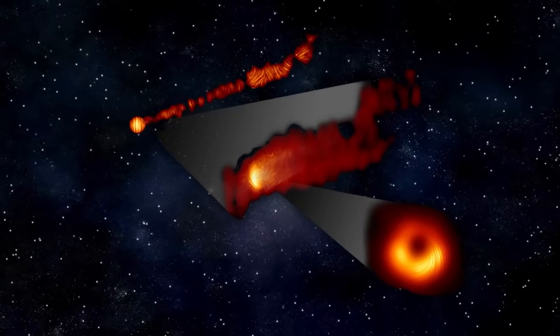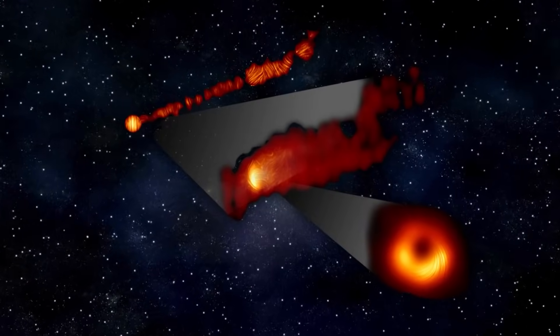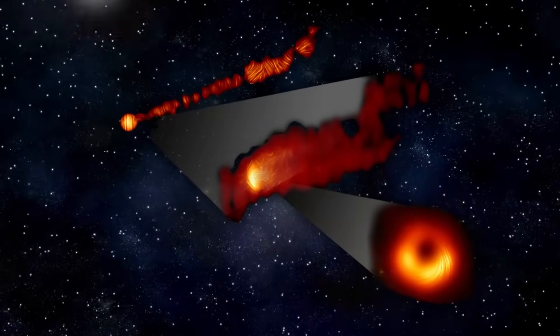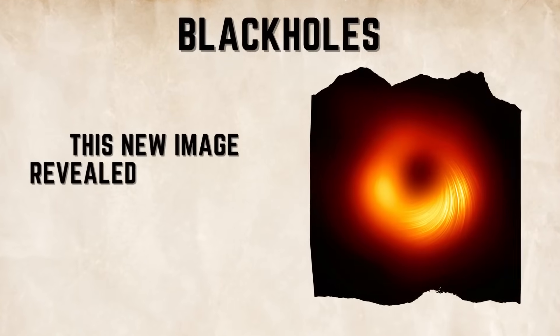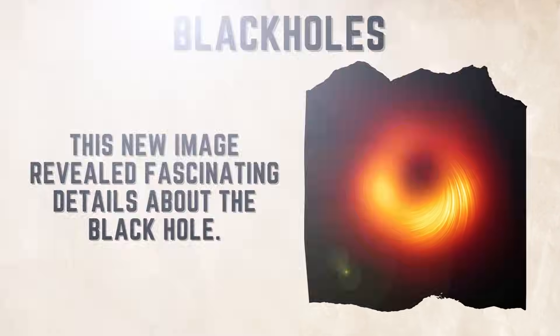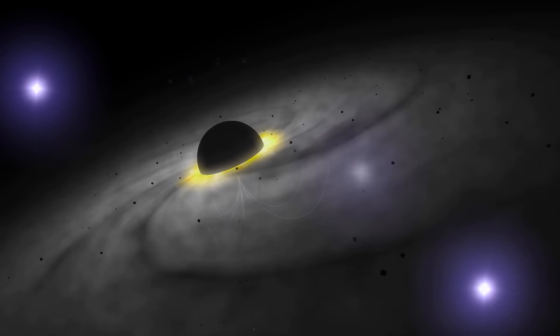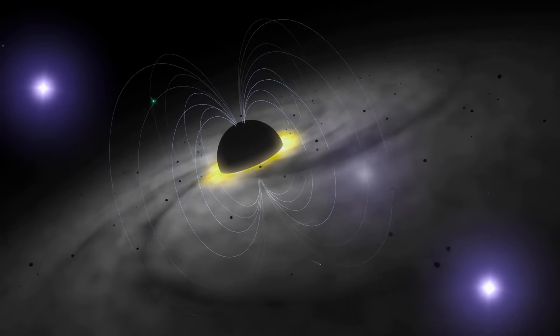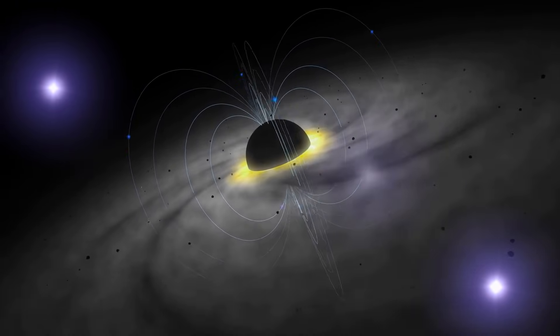Polarized light waves have distinct orientations and brightness compared to regular light, and this new image revealed fascinating details about the black hole. It showcased the presence of magnetic fields by displaying the polarization pattern in the rings surrounding the black hole.